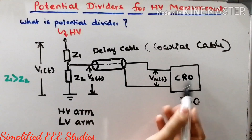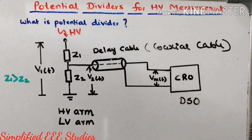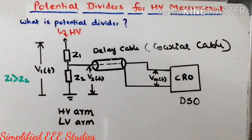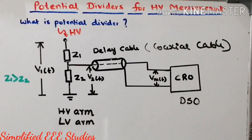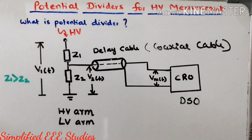The elaboration of CRO is cathode ray oscilloscope and the elaboration of DSO is digital storage oscilloscope, which is more advanced. Nowadays we employ DSO instead of using a CRO. Once you obtain the voltage sample at the CRO, by using calculation and manipulation you can determine how much voltage was applied externally.